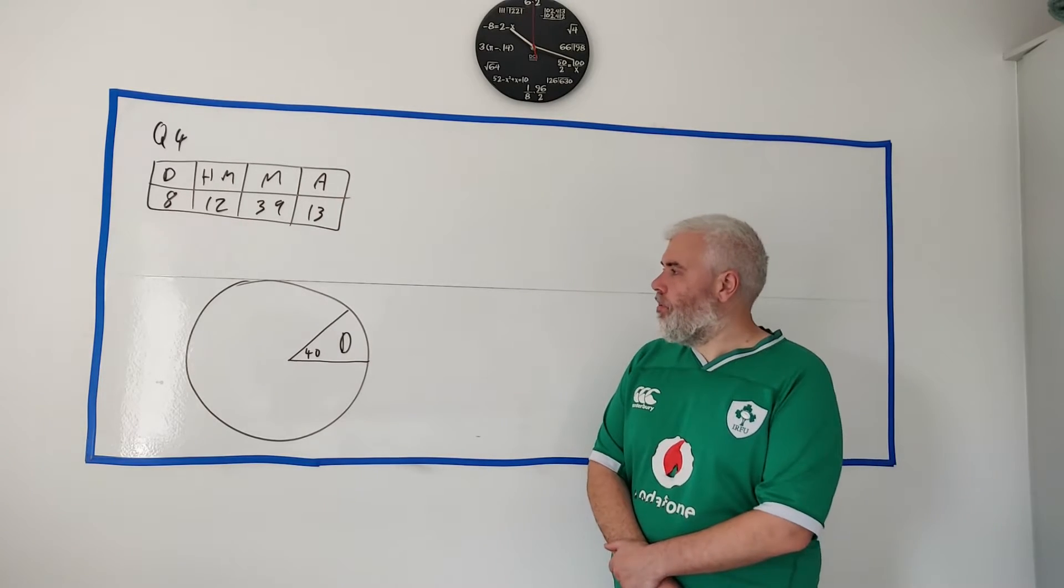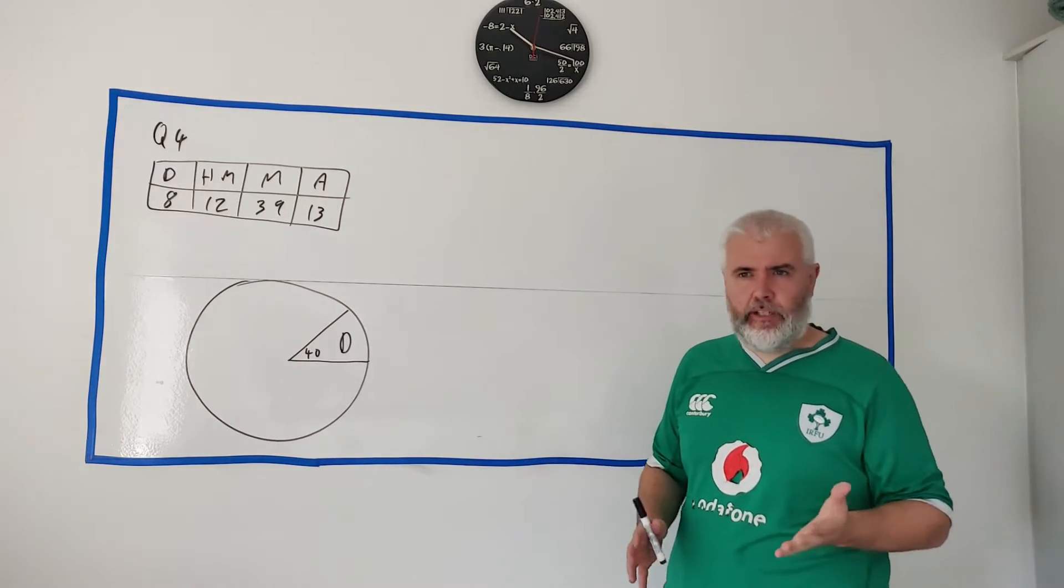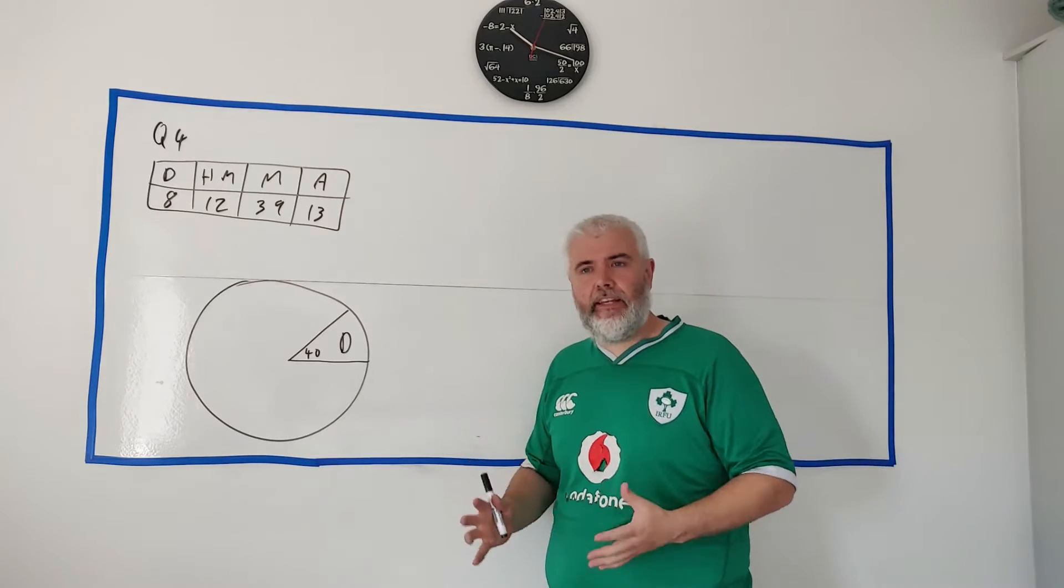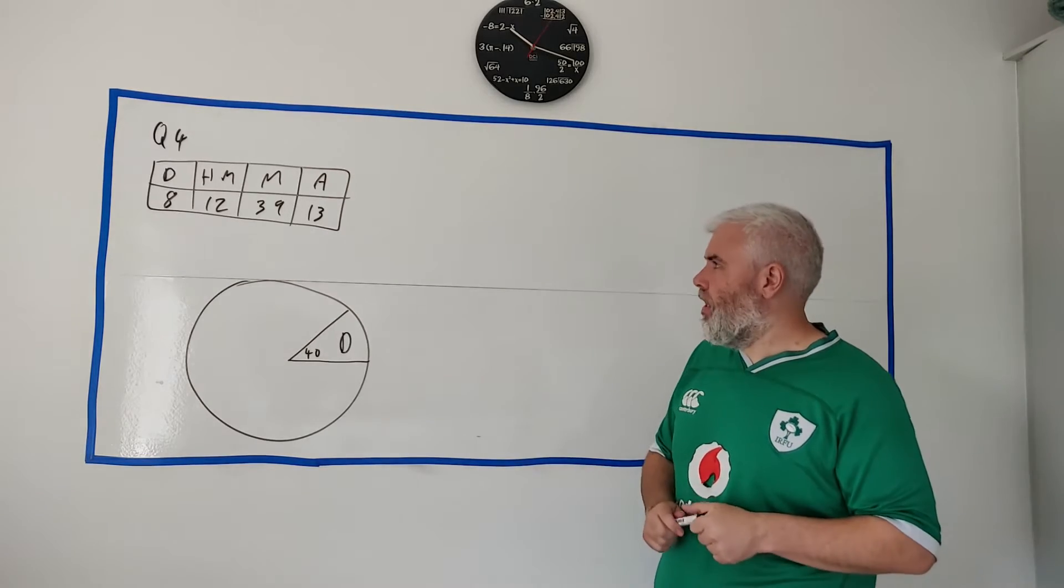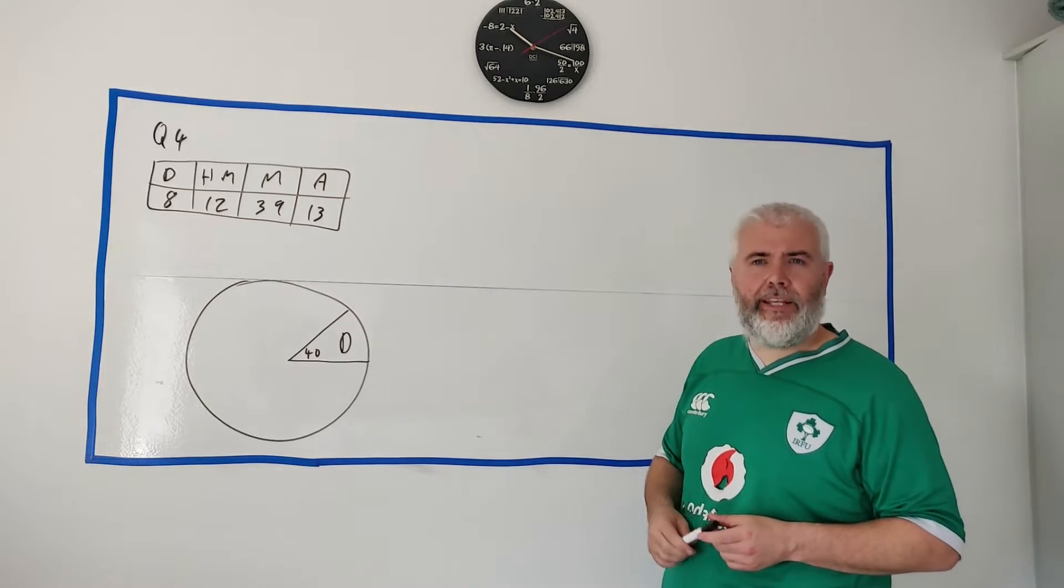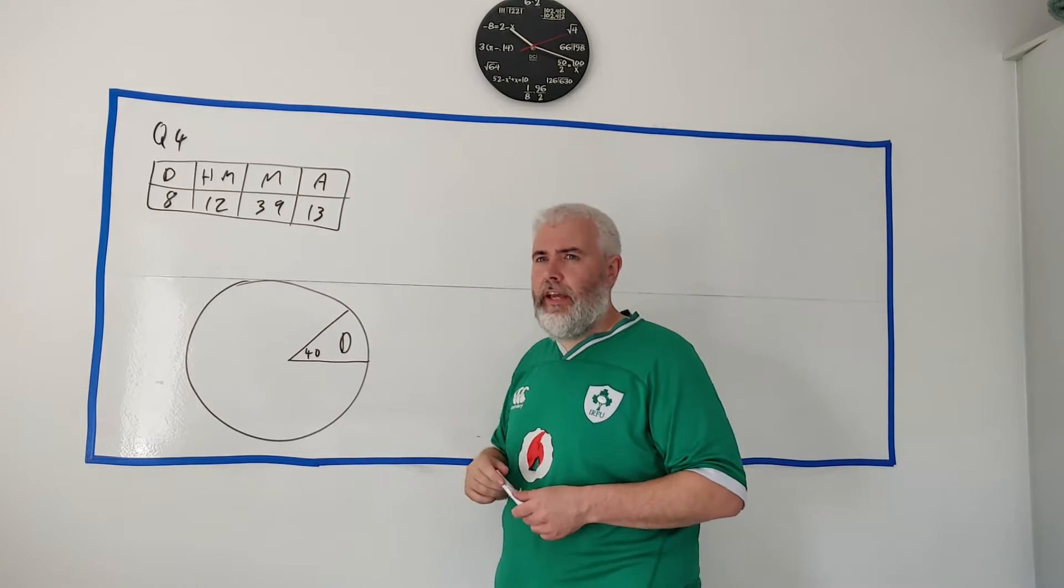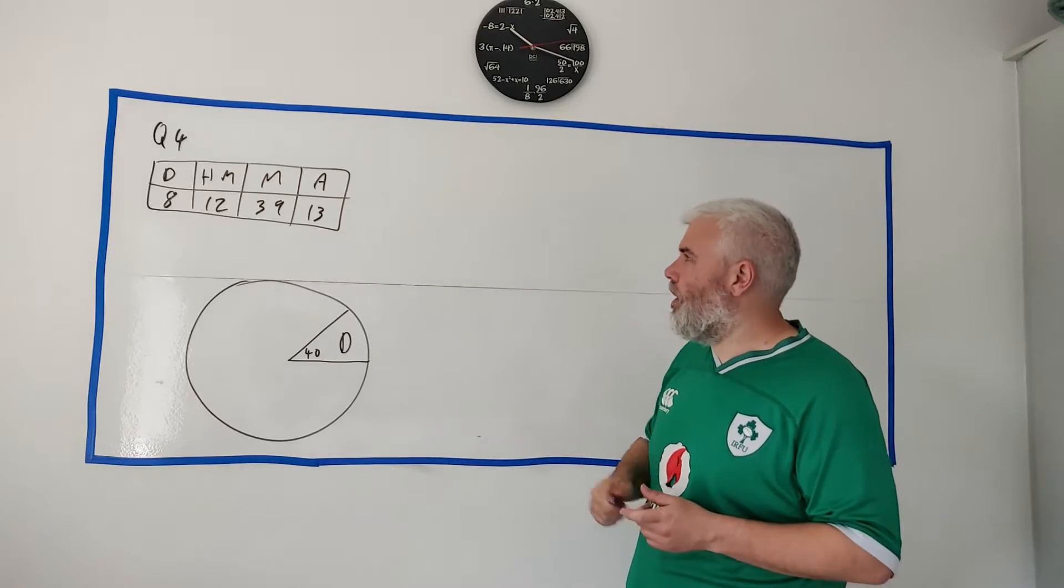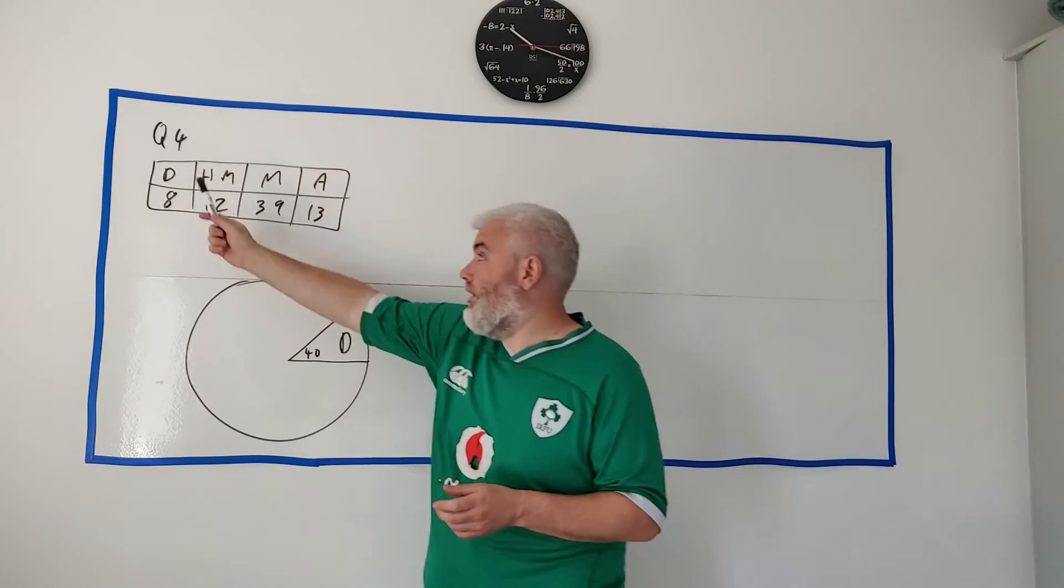And this is question 4. In this question we're going to be doing some statistics, dealing with data and a bit of probability. At the start of this question they give us a group of students, they don't tell us how many students, a group of students and their grades they get.